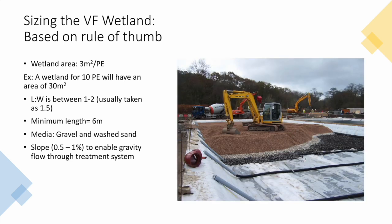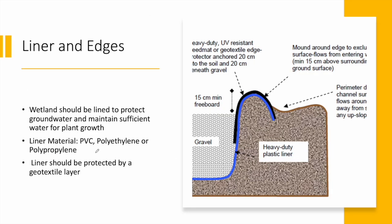The drainage pipe is a perforated pipe covered by coarse gravel, then finer gravel, then sand, and another gravel layer at the top. The wetland bottom must be sloped at 0.5 to 1% to enable gravity flow through the treatment system. The wetland must be adequately lined to protect groundwater and maintain sufficient water for plant growth. Liner materials can be PVC, polyethylene, or polypropylene, and it is advised to protect the liner with a geotextile layer.